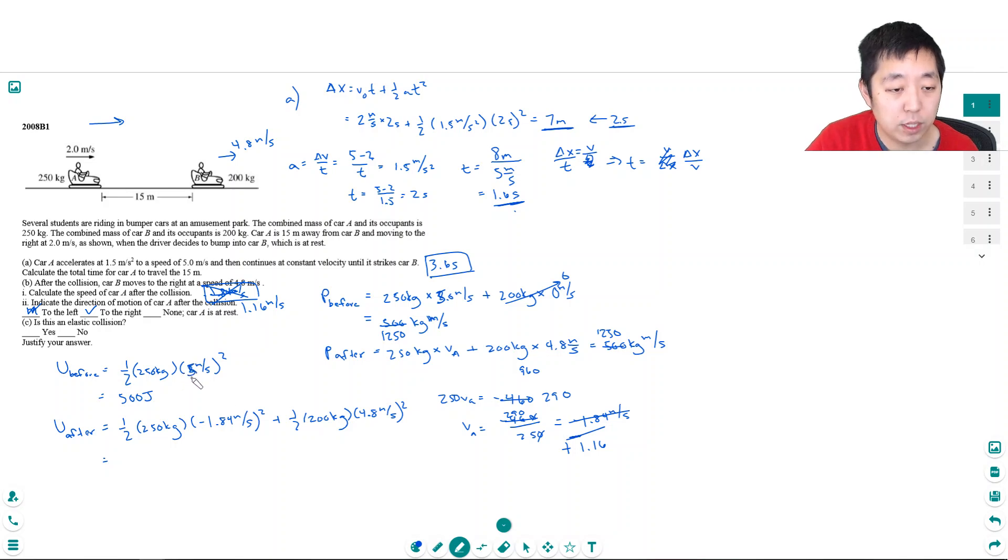Okay, so let's compute this one again. The U before, 5 squared times 250 times 0.5, I get 3125 joules. And then this is 1.16. So then 250 times 1.16 squared plus 0.5 times 200 times 4.8 squared, I get 2472.2 joules. Okay, so you see the energy before and the energy after are not the same. So this is an inelastic collision because the energy is not conserved. So no, it is not elastic, because the energy before is not equal to the energy after.